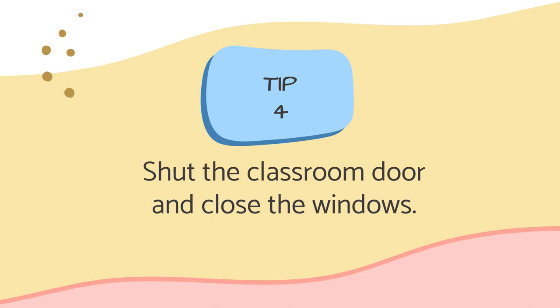Tip four: Shut the classroom door and close the windows. You will be surprised how much noise travels into your room via the hallway or from outside. Consider shutting your door and closing the windows to cut down on unnecessary distractions from the outside environment. You might even need to close the blinds if your classroom is positioned near a field or playground, as students like to watch other children play. You can also position seats facing away from the window to prevent distractions.